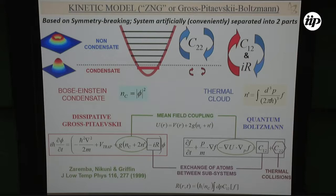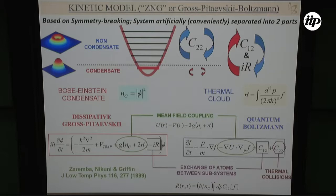In a simplified cartoon picture, one has the condensate in a harmonic trap and then the non-condensate — the thermal particles. I do this distinction artificially, dealing with two systems: the condensate and the thermal cloud. The Gross-Pitaevskii equation describes just the interactions within the condensate, and the ordinary Boltzmann equation describes thermal-thermal collisions. Because I have two systems, I have exchange of particles between them.